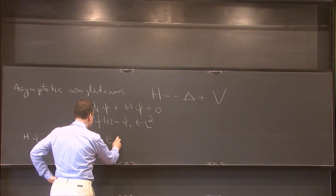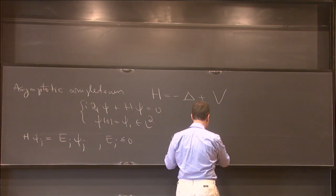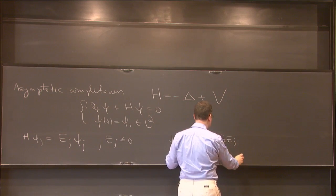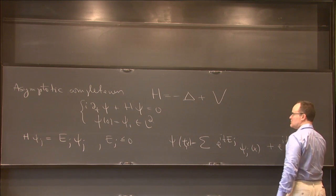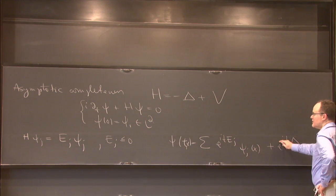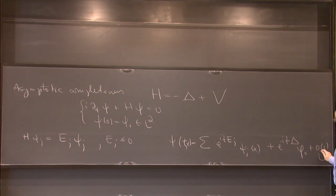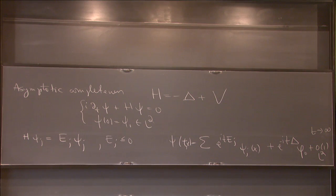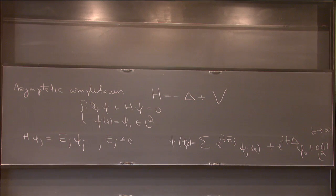Negative eigenvalues — can be zero too. Then the solution, that's the theorem, becomes a superposition... So this is the famous asymptotic completeness result. As time tends to infinity, the solution disintegrates into the bound states — the trapped, localized states — and then you have a free Schrödinger wave, with a little-o(1) remainder.